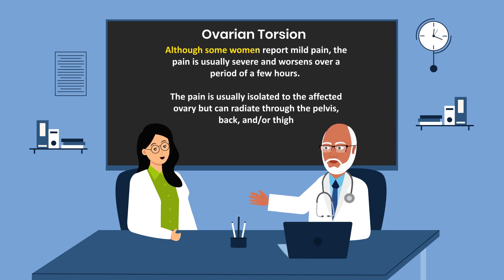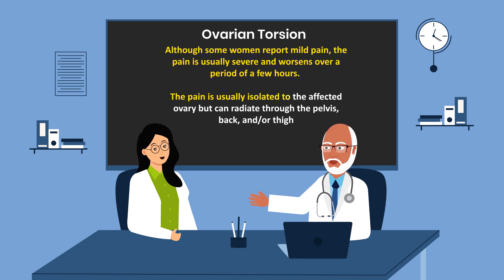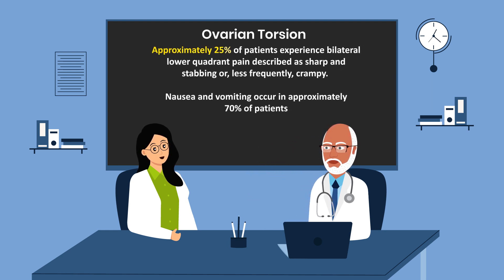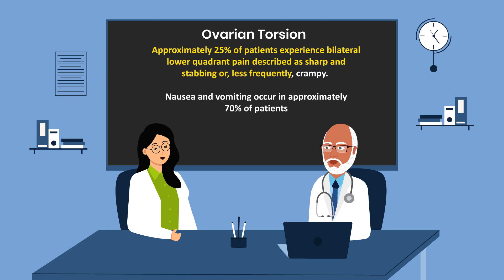Although some women report mild pain, the pain is usually severe and worsens over a period of a few hours. The pain is usually isolated to the affected ovary but can radiate through the pelvis, back, and or thigh. Approximately 25% of patients experience bilateral lower quadrant pain described as sharp and stabbing, or less frequently crampy.